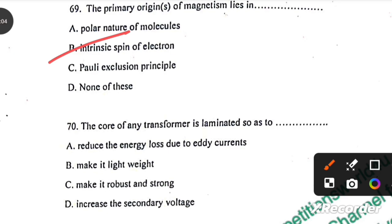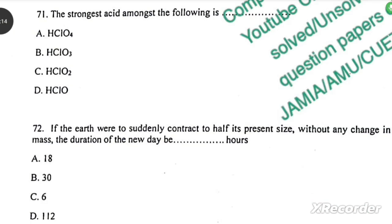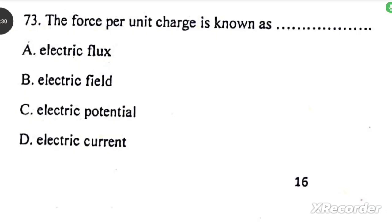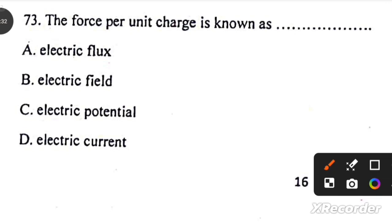The core of any transformer is laminated so as to reduce the energy loss due to eddy currents. The strongest acid among the following is HClO4. If the earth were to suddenly contract to half its present size without any change in its mass, the duration of the new day will be 6 hours. The force per unit charge is known as electric field.